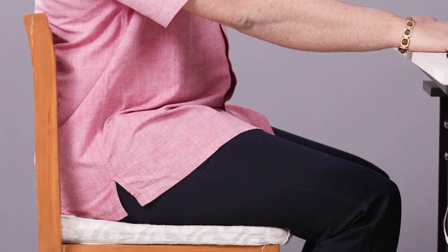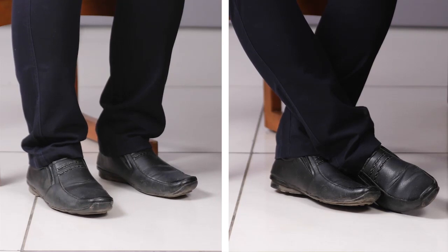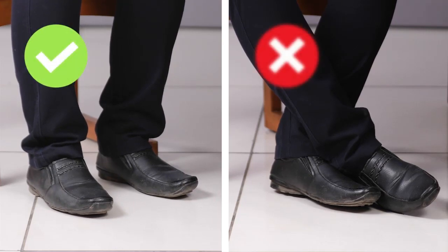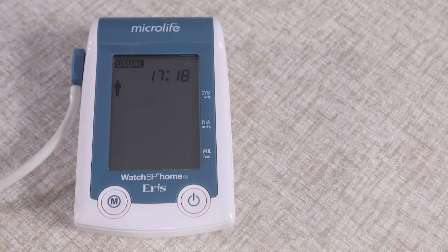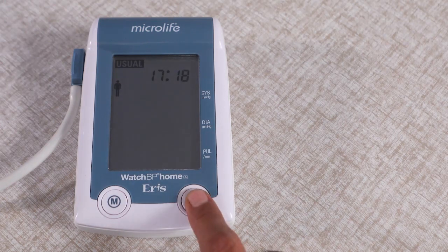Sit upright with back supported. Make sure your legs are grounded and not crossed. Do not speak and move while the machine measures your blood pressure. Once in position, press this button.